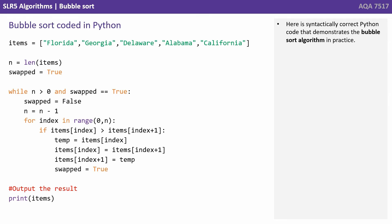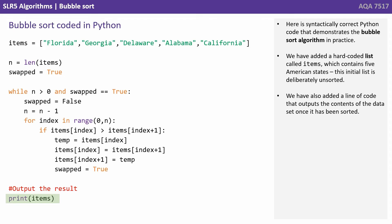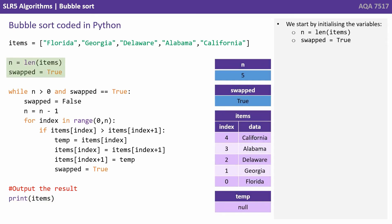Here is syntactically correct Python code that demonstrates the bubble sort algorithm in practice. We have added a hard-coded list called items, which contains five American states. This initial list is deliberately unsorted. We've also added a line of code that outputs the contents of the data set once it has been sorted. We start by initialising the variables: n equals length of items and swapped equals true, so n is five and swapped is true.